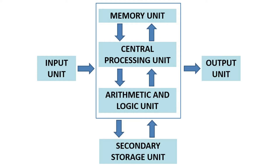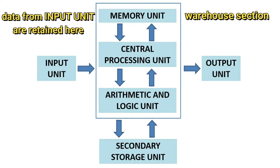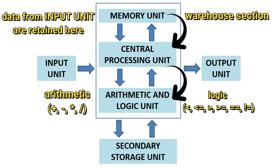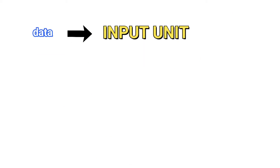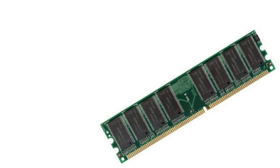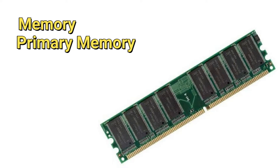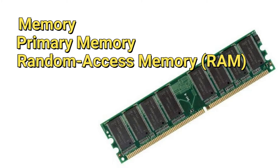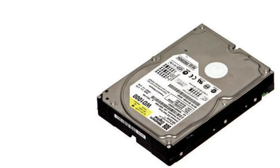Another unit is the memory unit. This rapid-access, relatively low-capacity warehouse section retains data that has been entered through the input unit, making it immediately available for processing when needed. Once the data is captured from the input unit, it will be stored in memory — this is the work of the memory unit. It will be retained until it is processed later on. The memory unit is often called primary memory. It is a short-term memory, meaning the data here will not last — if you turn off the computer, the data stored in the memory unit is gone, unlike with the secondary storage unit, which will retain the data.